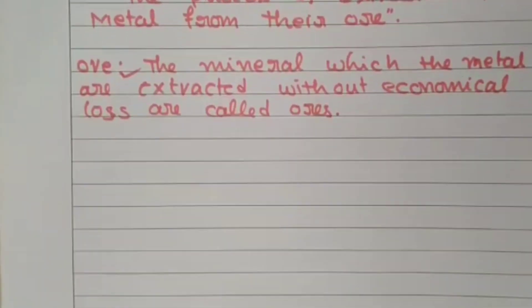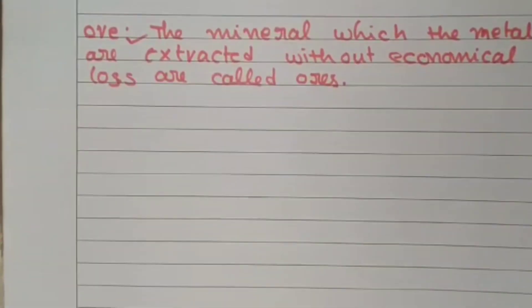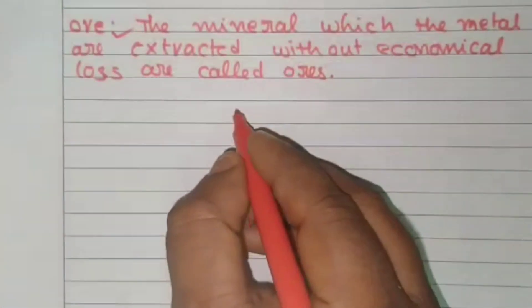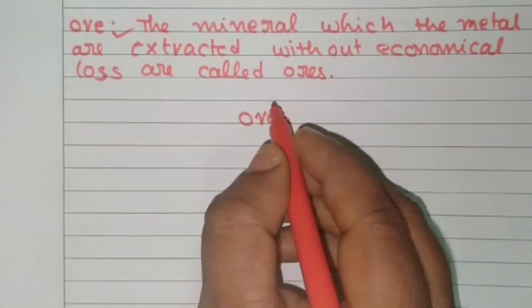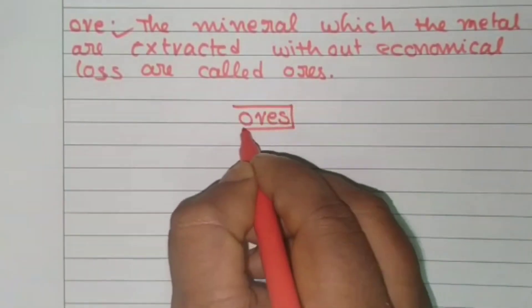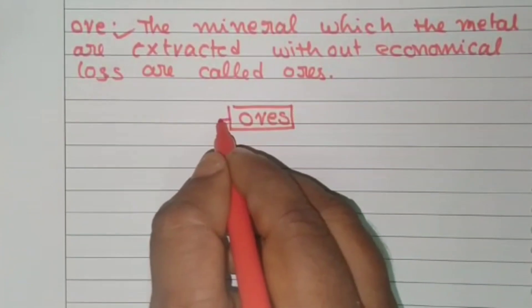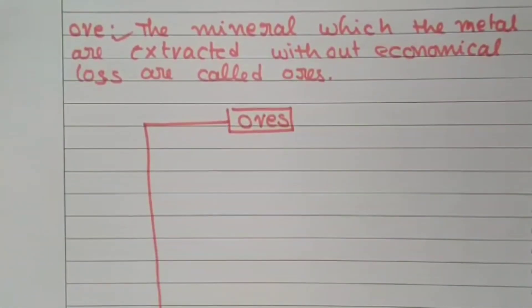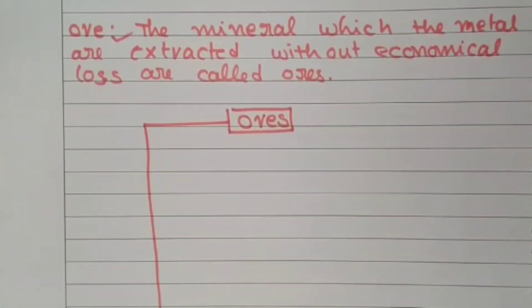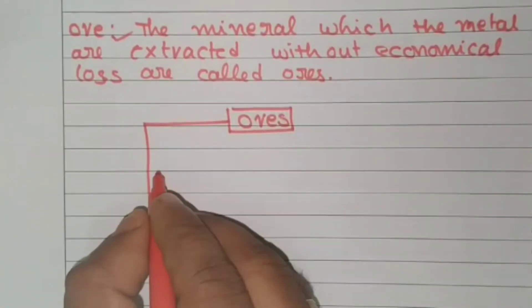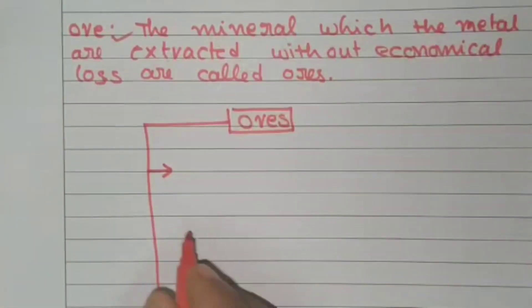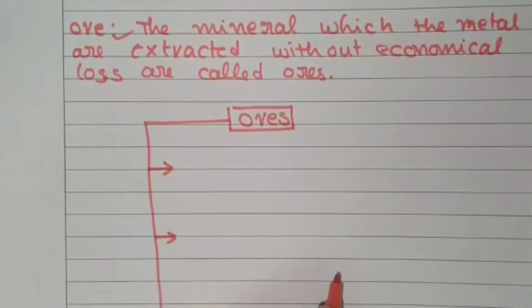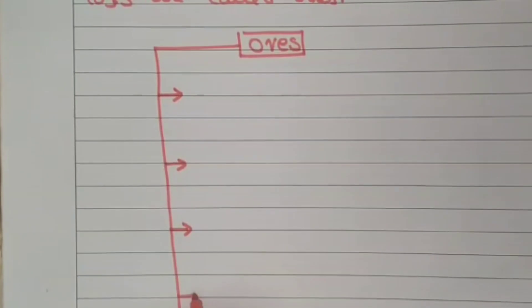Now we'll discuss the classification of ores — that is a very important view at the examination level. The ores are mainly classified into five types according to our AP state textbook. I want to explain these simply so you can easily recognize these points.